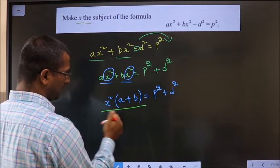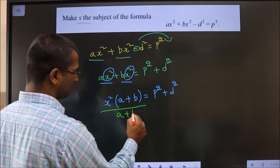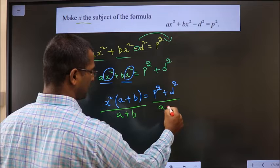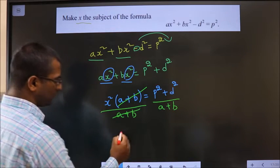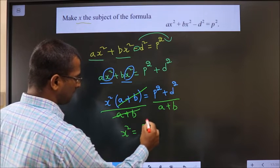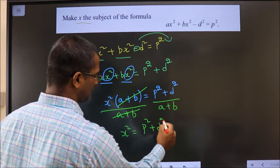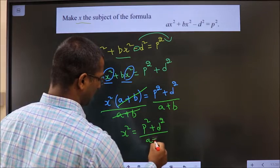Now, divide by a plus b. Why are we dividing? Such that this cancels out leaving you with x square equals p square plus d square by a plus b.